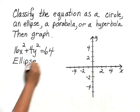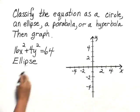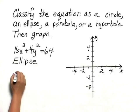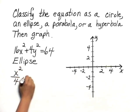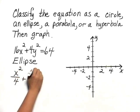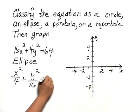So we've classified the equation. Now, to graph it, let's write this in standard form. Let's divide each term by 64. That would give us x squared over 4 plus y squared over 16 equals 1.